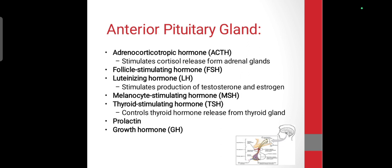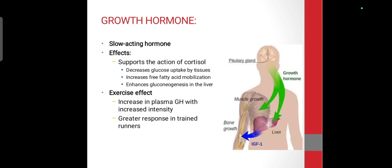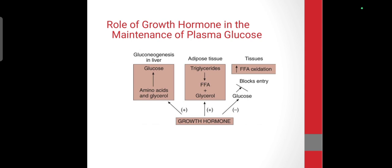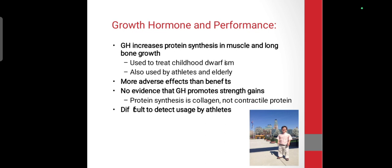Adrenocorticotropic hormone stimulates cortisol from the adrenal gland. FSH and LH stimulate testosterone and estrogen. Growth hormone is the main and most important slow-acting hormone. Cortisol works to support glucose and free fatty acid mobilization. During exercise, the growth hormone response will be greater in untrained individuals compared to trained runners.